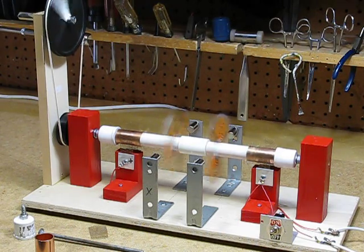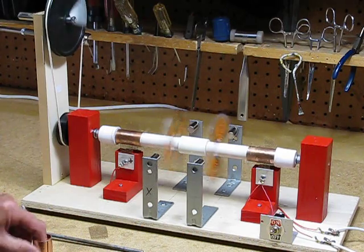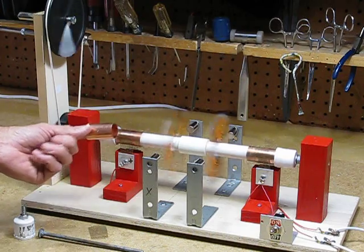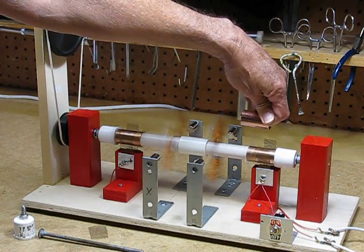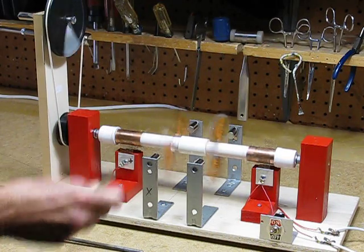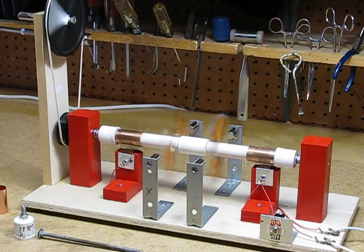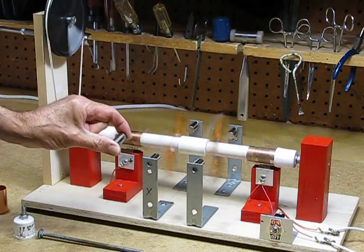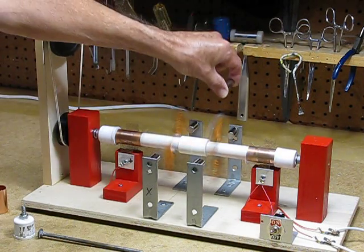The two commutators are copper pipe fittings cut lengthwise with a hacksaw. The brushes are pieces of copper screen material. Four very powerful rare earth magnets adhere magnetically to the four angle brackets.